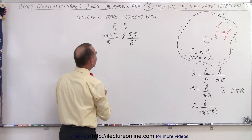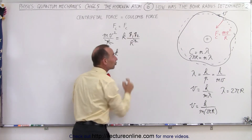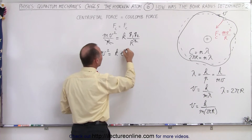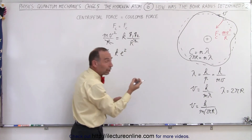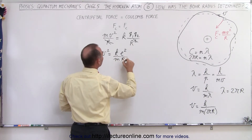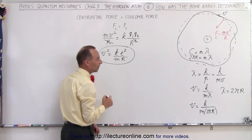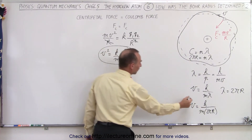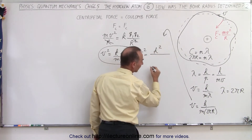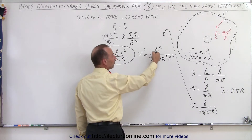Now solving for v from the force equation, we can see that r cancels, so we can write that v² equals k times q₁ times q₂. The charges are the electron and proton, each with base charge e, so we write e², since the charge of the electron equals in magnitude the charge of the proton. We then have ke² divided by r and divided by m, giving us an equation for v².